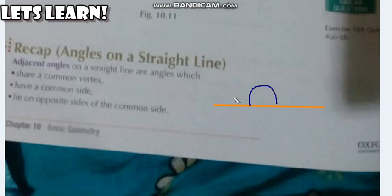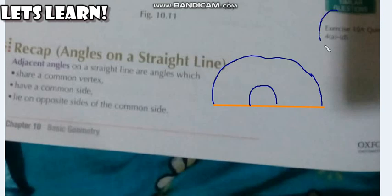If you want to complete it, half of a straight line represents half of a circle. We know how many degrees are in a full circle — a full circle has 360 degrees. So half of a circle will have 180 degrees.